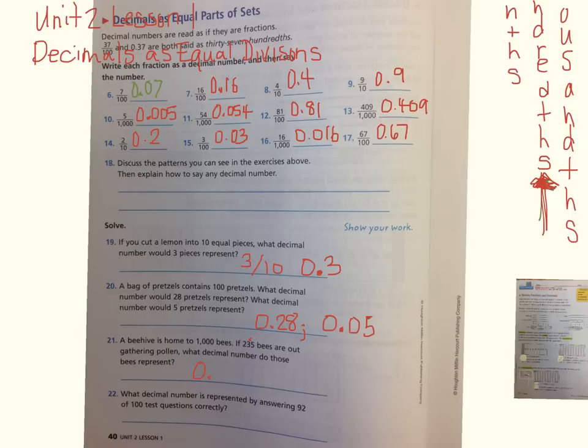Zero decimal two hundred thirty-five thousandths of the bees were out gathering pollen. What decimal number is represented by answering ninety-two of one hundred test questions correctly? Think of it as ninety-two hundredths of the test you answered correctly.